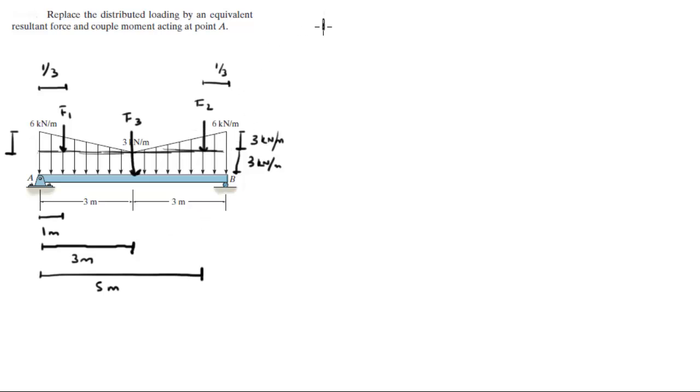So let's find the forces first. F1 is equal to the area of the triangle. What's the area of the triangle? Its height is 3, its length is 3, but you gotta divide by 2 because it's a triangle. So this comes out to be 4.5 kilonewtons.